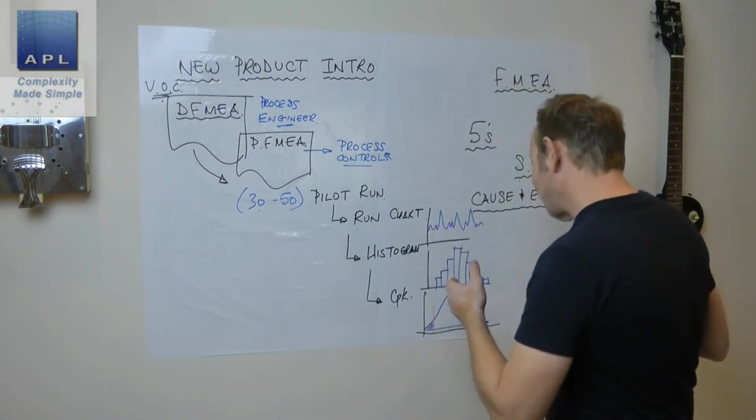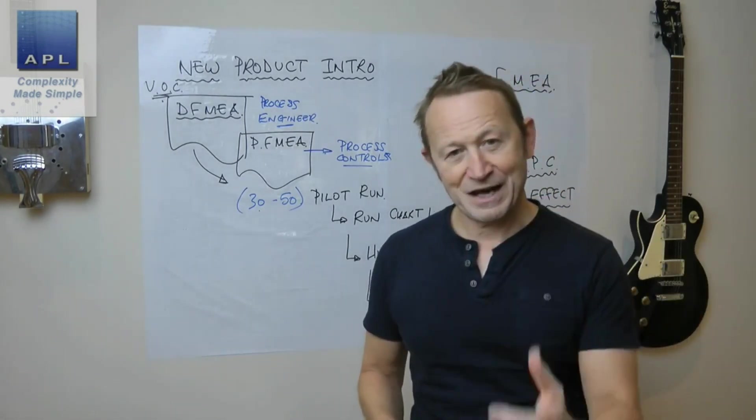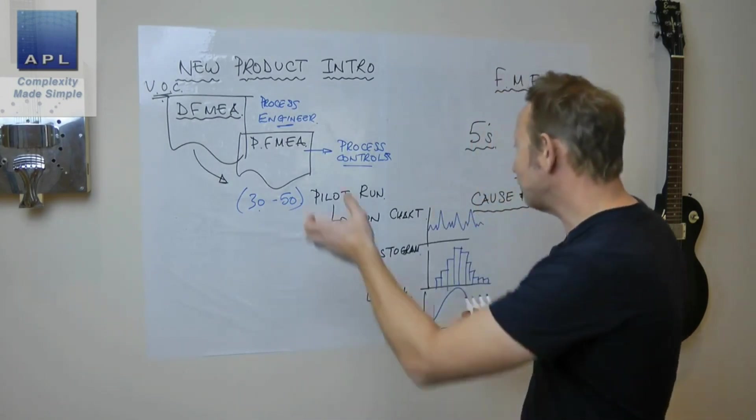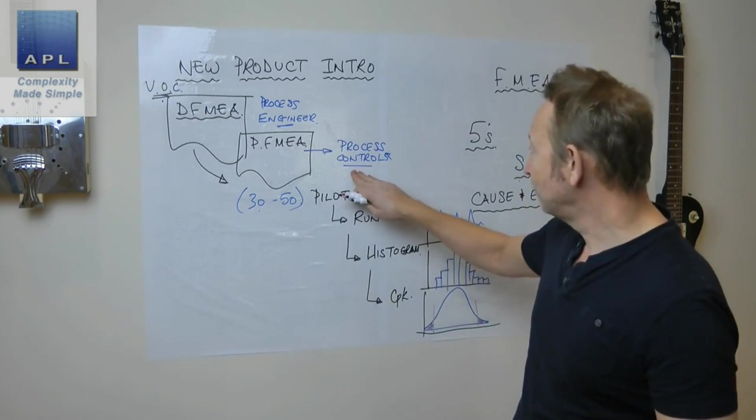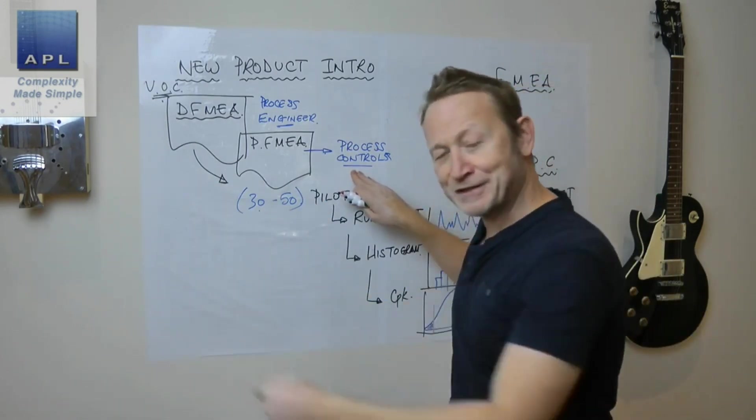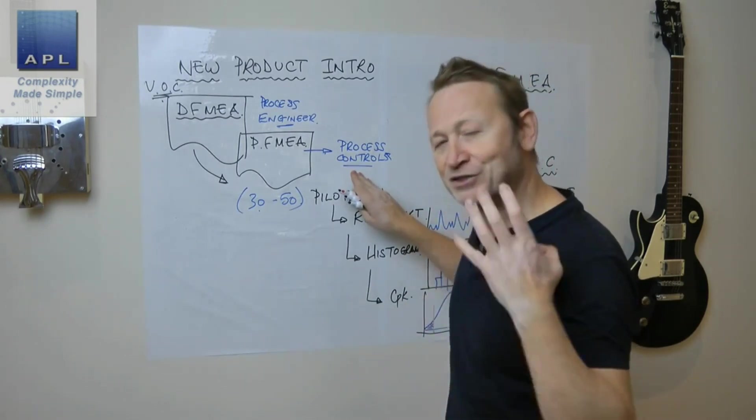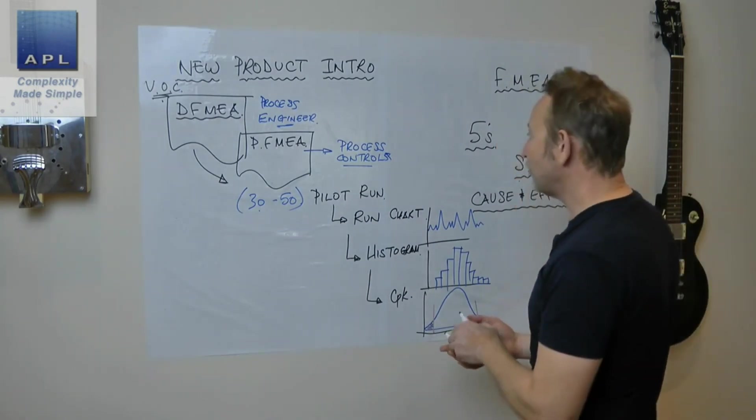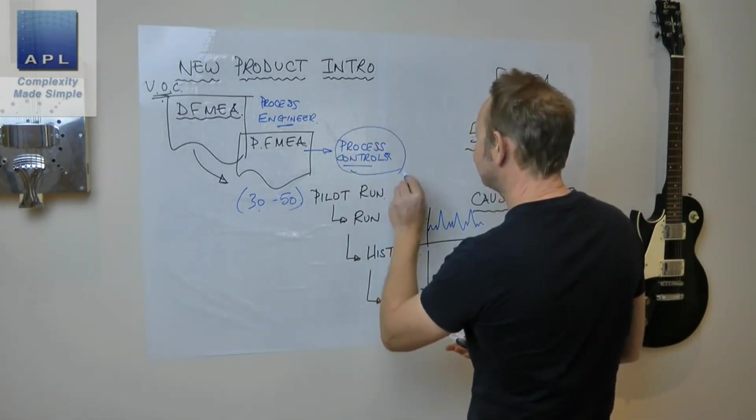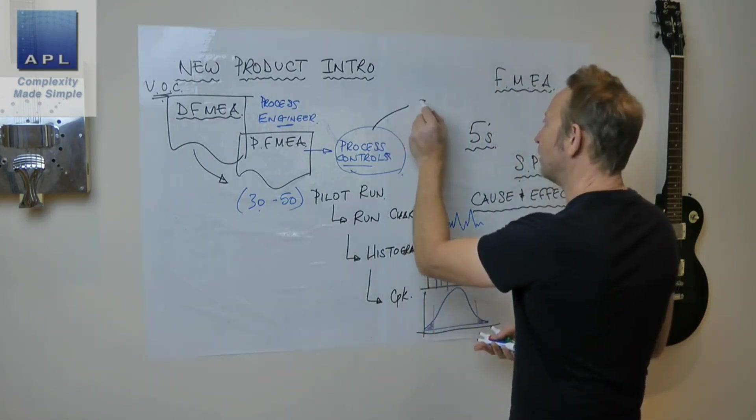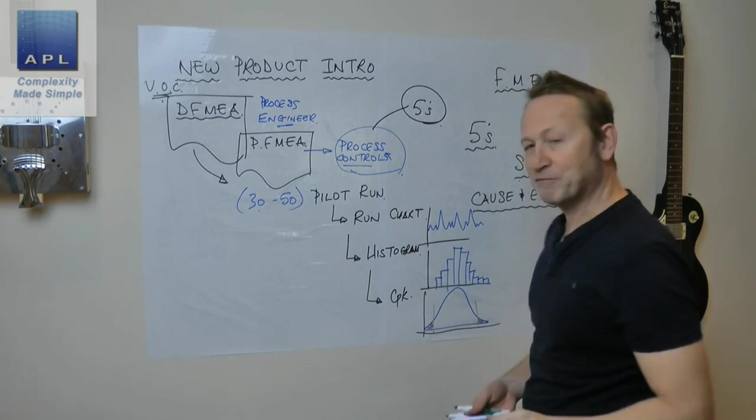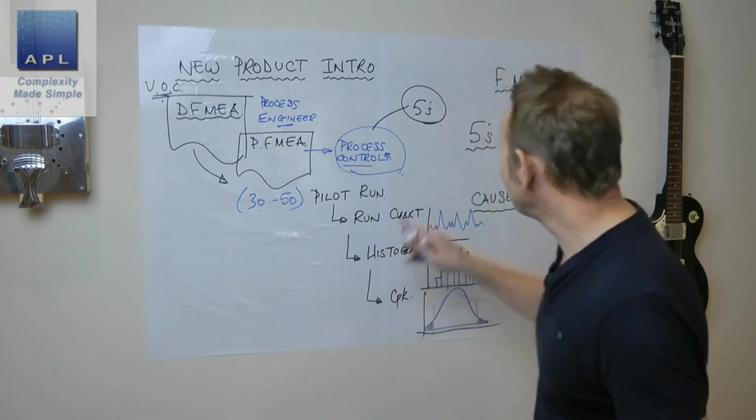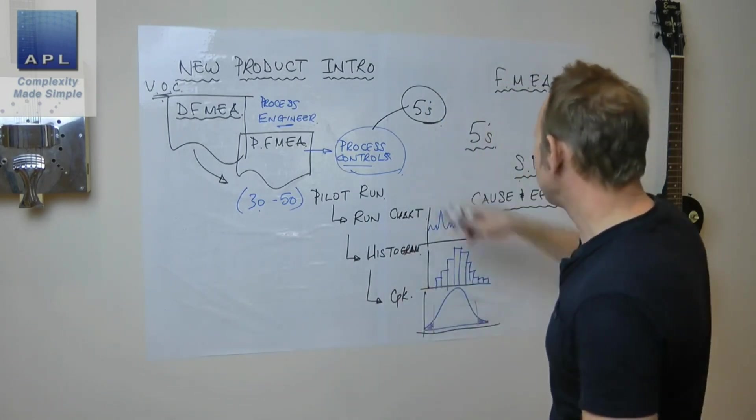Once I've established that I have a capable process, now what I'm going to do is lock all of this good stuff in. I'm going to lock all my process controls in now for the next five years because we're going to run this process successfully for the next five years. Now out of the process controls, where are we going? We're going to the point of activity and I'm going to put some visual controls and make everything visual.